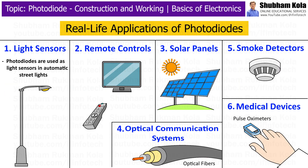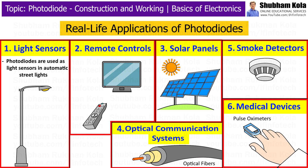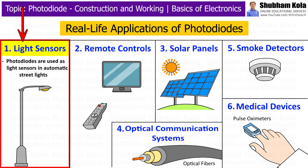Now we will see real-life applications of photodiodes. Photodiodes are used in many practical applications. The first is light sensors. Photodiodes are widely used as light sensors in various devices. For example, in automatic street lights, a photodiode detects the amount of sunlight and turns the lights on or off accordingly.